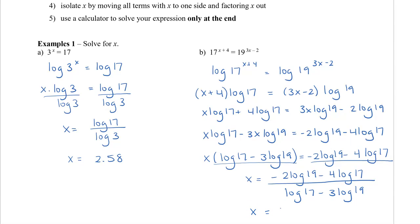Divide both sides by the expression log 17 minus 3 log 19. The final answer is X equals (negative 2 log 19 minus 4 log 17) divided by (log 17 minus 3 log 19). When typing this into your calculator, be very careful: put brackets around the entire numerator, divide by brackets around the entire denominator — otherwise the calculator won't divide the full numerator by the full denominator. You should get approximately 2.87.